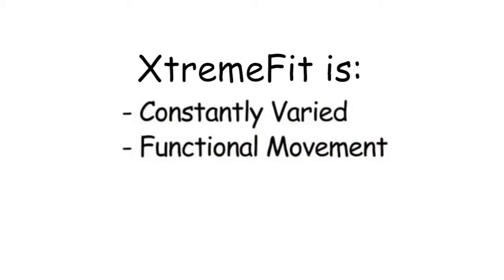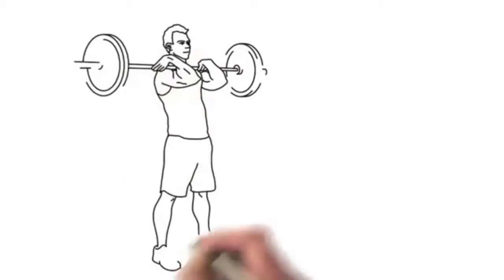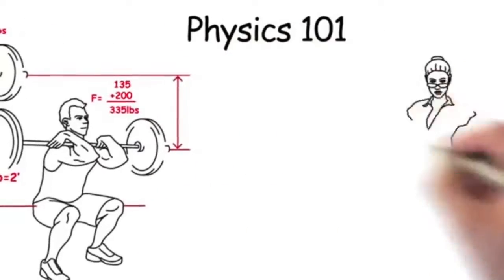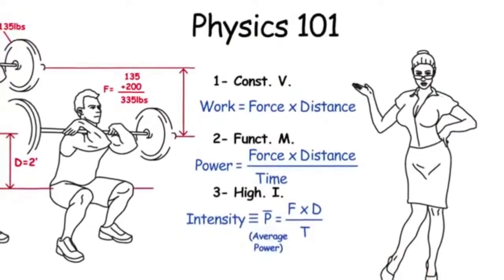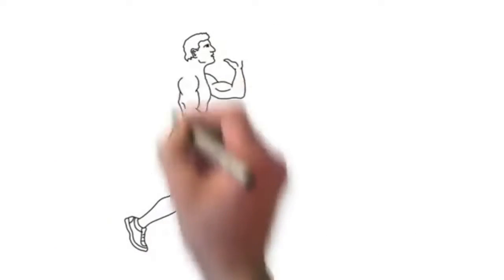Constantly varied functional movements performed at high intensity. Intensity is a measurement of physics, not opinion. It's a key element of fitness. Intensity is measured by how fast you get real work done. Casual jogging is easy and low intensity.